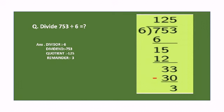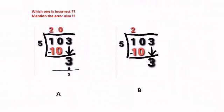Six 5s are 30 and six 6s are 36. Since 36 is more than 33, we take 30. Subtract: 33 minus 30 equals 3. There are no more digits to bring down, so our answer is complete.